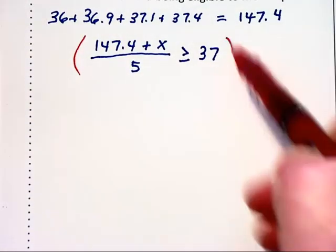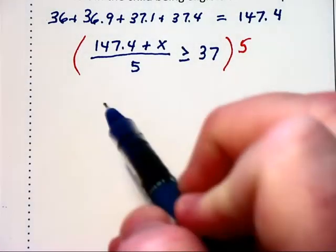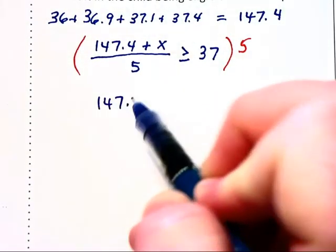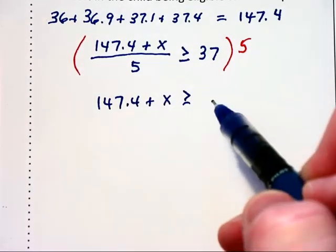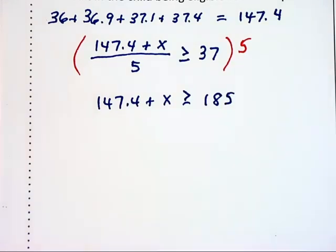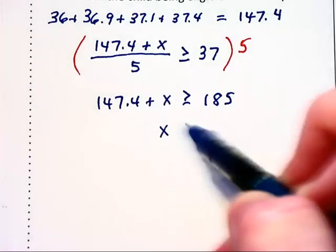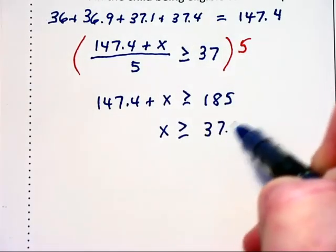At least turns into a greater than or equal to symbol. We can solve this by multiplying through by 5 on each side. We then have 147.4 plus x on the left is greater than or equal to 185. And subtracting the 147.4 off of each side, we then have x is greater than or equal to 37.6.